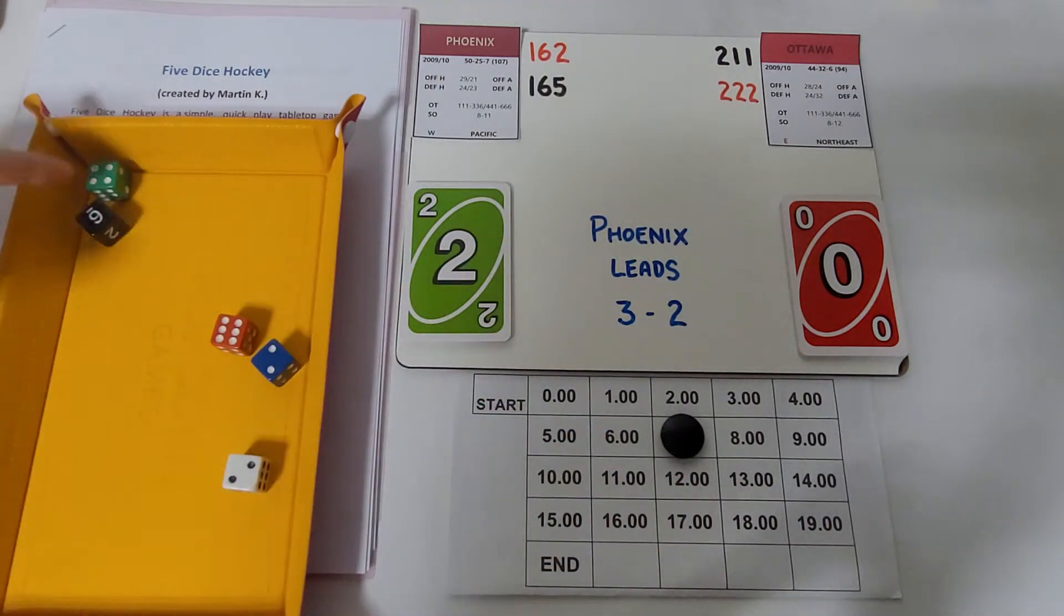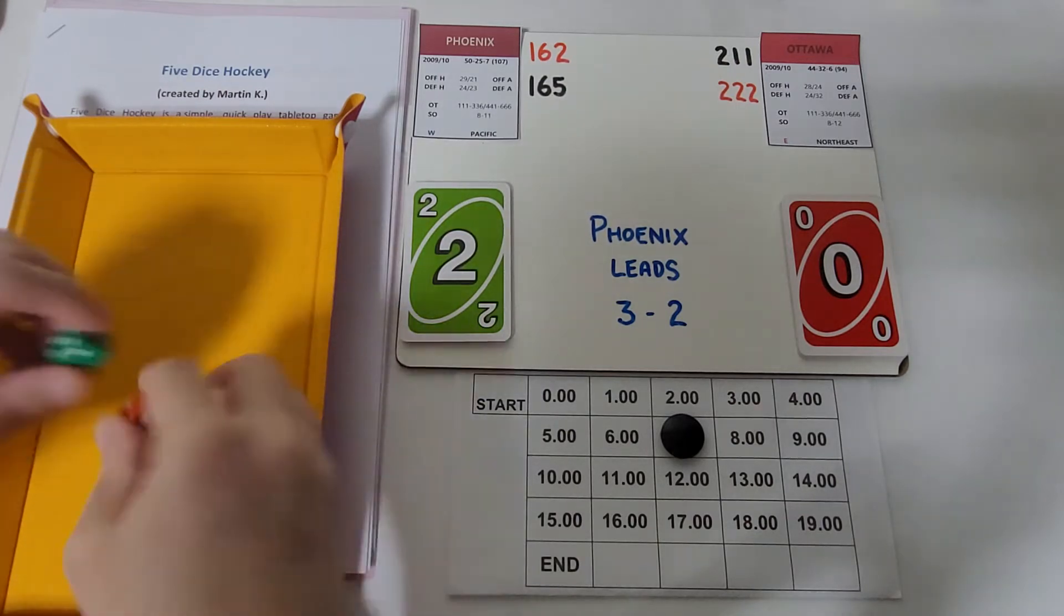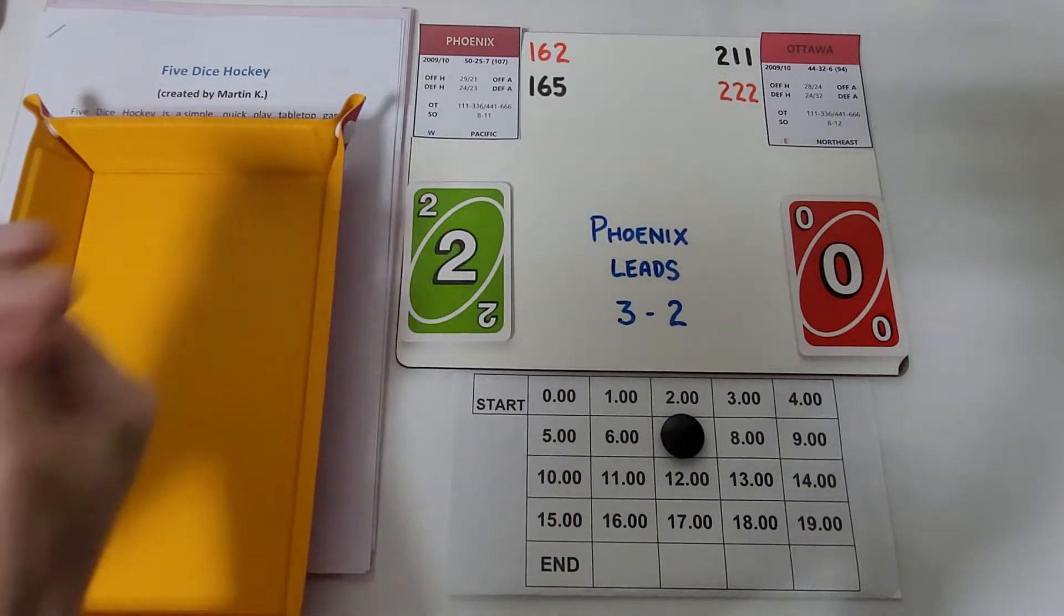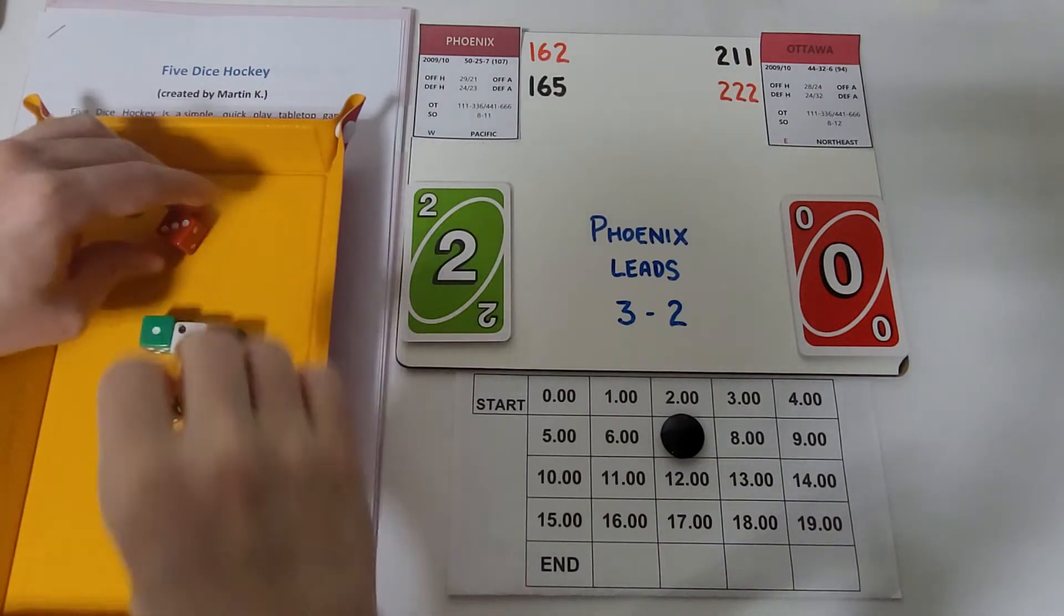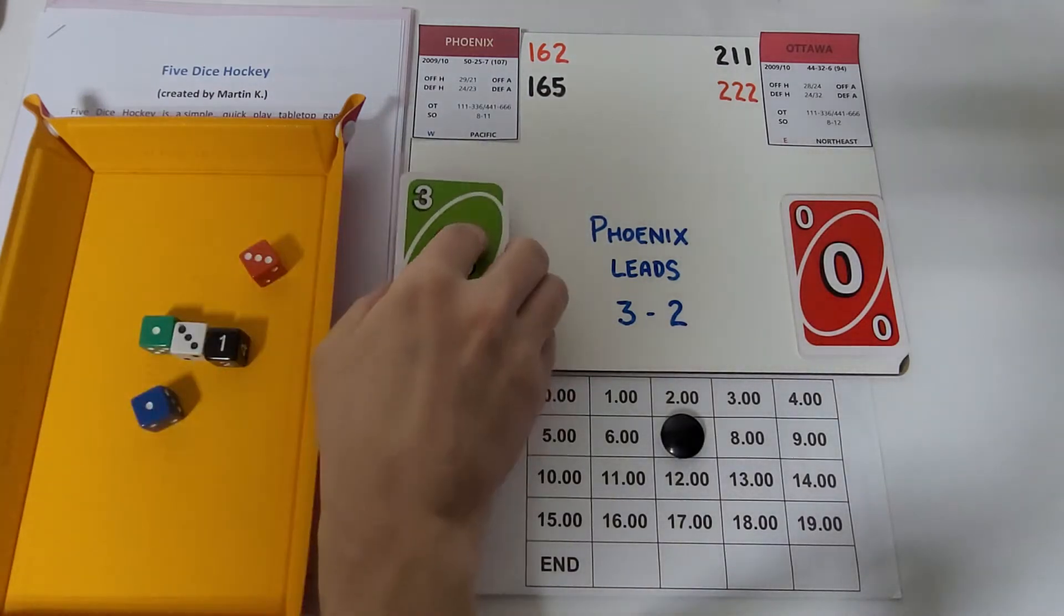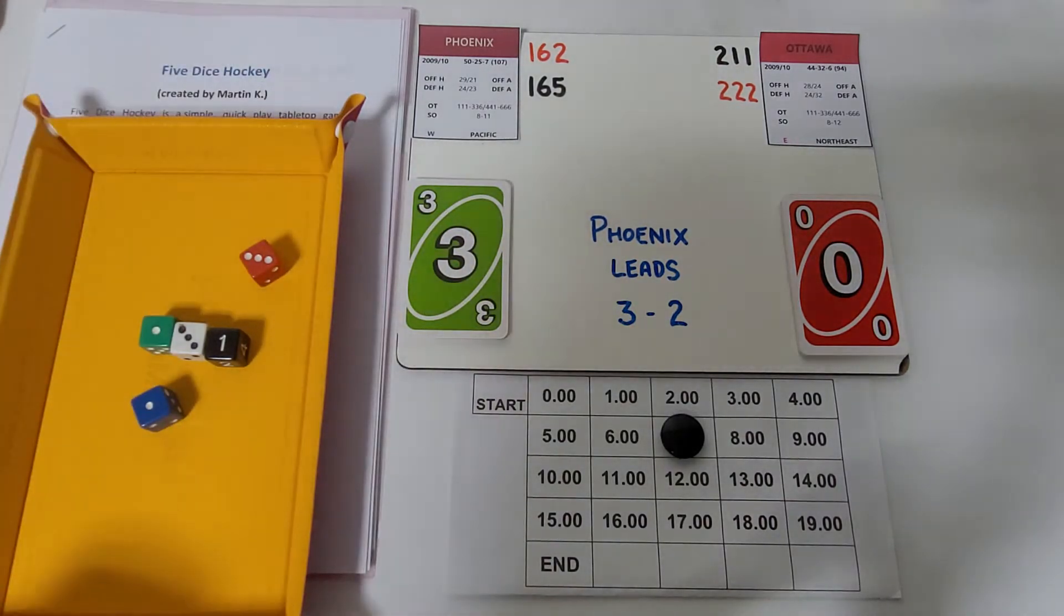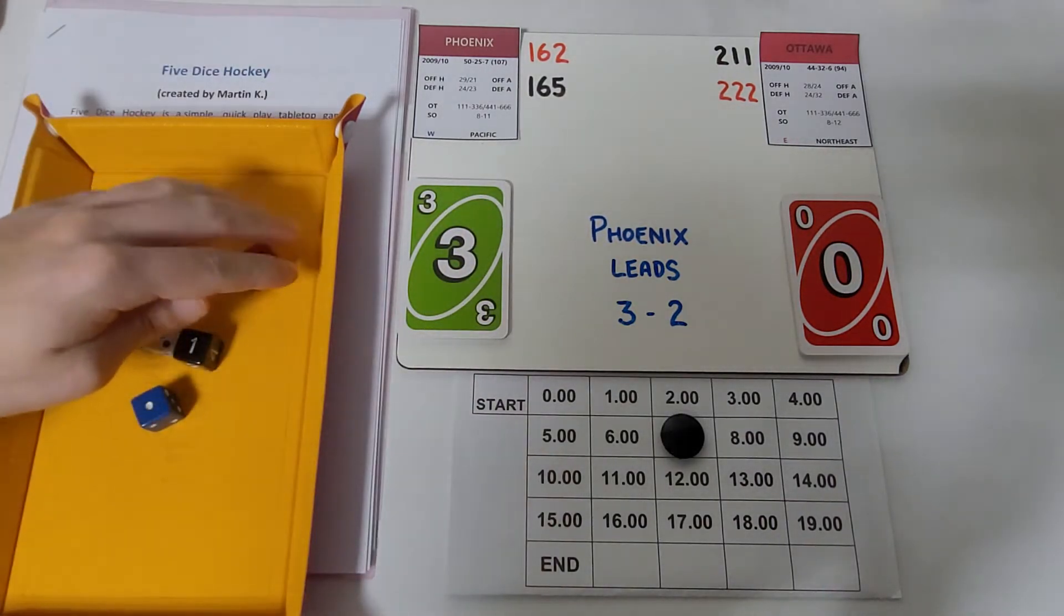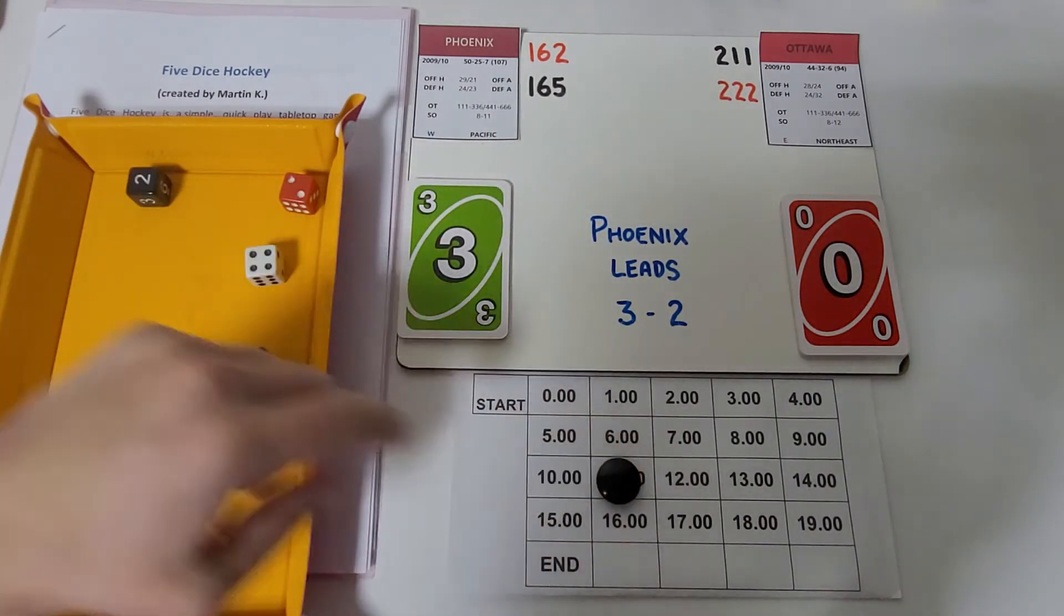We'll credit Matthew Lombardi with that goal, maybe Keith Yandle set him up. We get another minute. I thought I saw six but it's a green six, which would have been a turnover. We're going to stay in the same minute. Look at this, a couple of quick goals. Phoenix is really liking it right now.